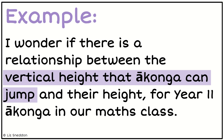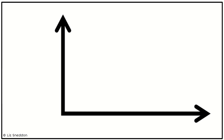Here's an example. I wonder if there's a relationship between the vertical height that our konga can jump — that's one of my variables — and their height, which is my second variable. Those are the two things that we want to identify a relationship between, and I've got to think about what I would hypothesise from those two variables.